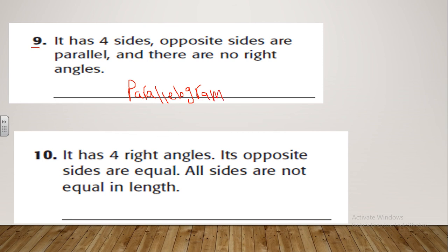Let's see number ten. It has four right angles and its opposite sides are parallel. All sides are not equal in length — meaning the four sides are not all equal, but each pair of opposite sides are equal. So can you tell me what is the name of this figure?